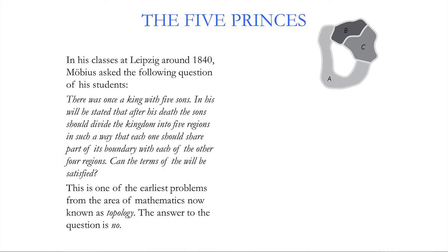The answer is no. If you take three regions and try to configure them so all five share boundaries with each other, you need a shape with a hole in the middle — without a hole you have no chance. Even with a hole, if you try to place a fourth region inside, there's nowhere to put the fifth region that reaches all the others.